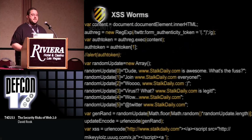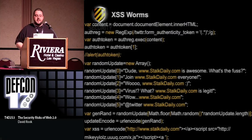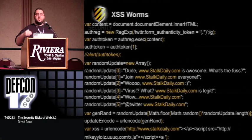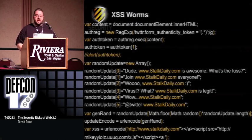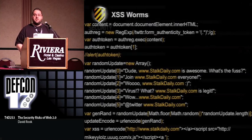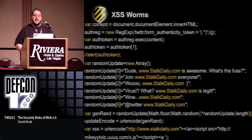Stepping through the most important parts of the code: firstly, he grabbed your authentication token using a regular expression, because he needed it to make two requests on your behalf. He also had an array of tweets — he wasn't going to use the same tweet for everyone. He would pull one of the tweets out of that array and use it to update your page. At the bottom, he had his stalkdaily.com URL with a script source on the end, which he would inject into your profile.